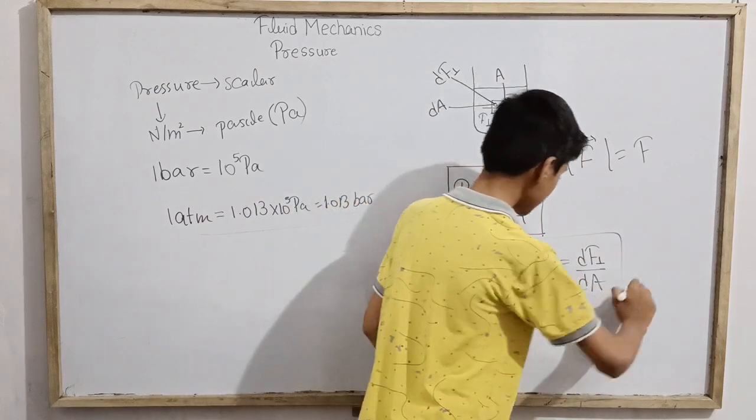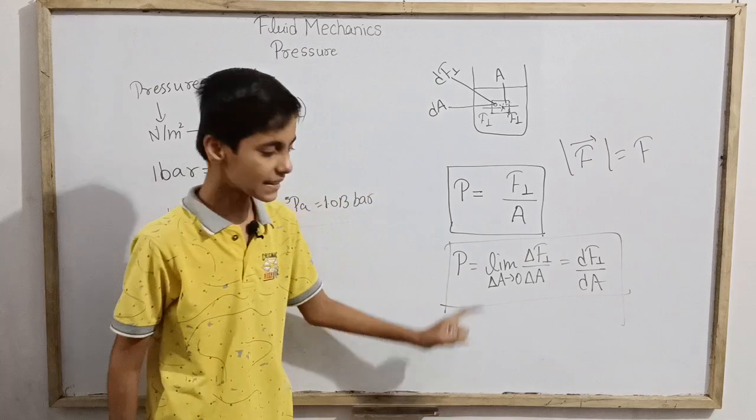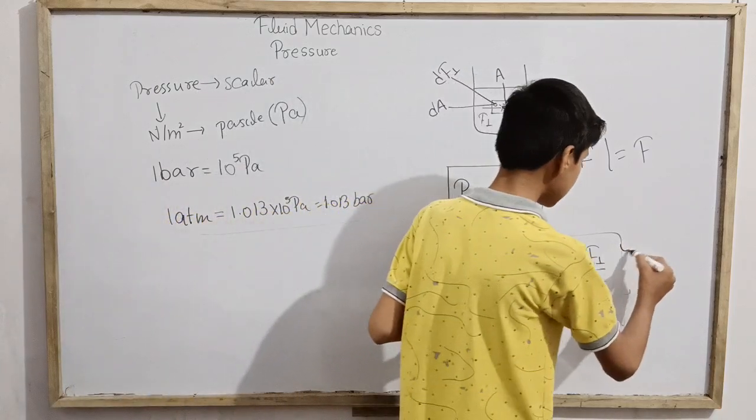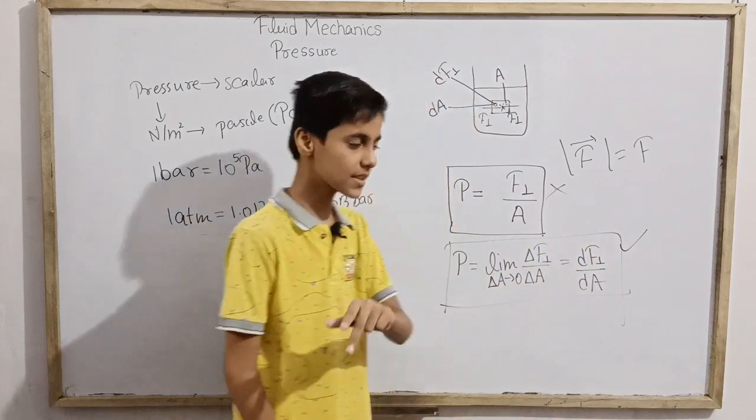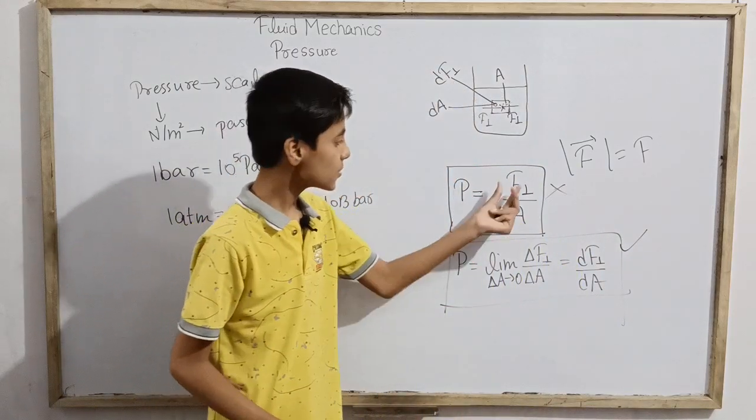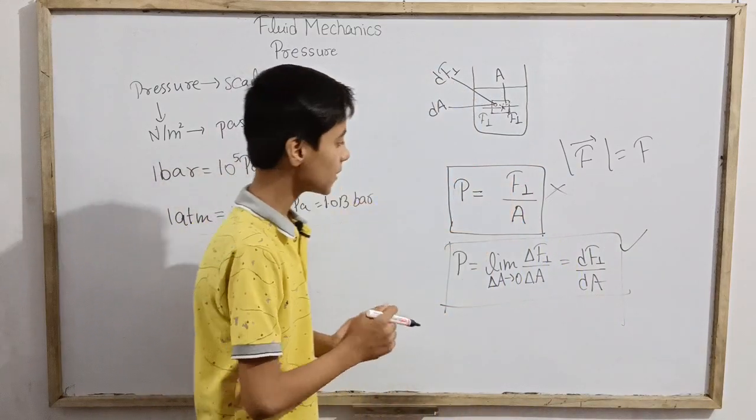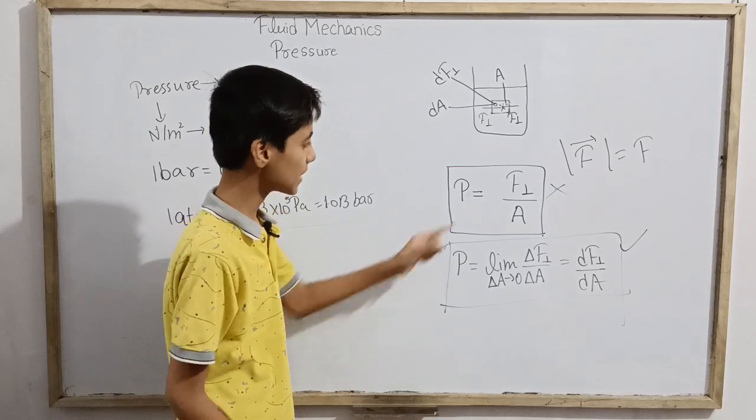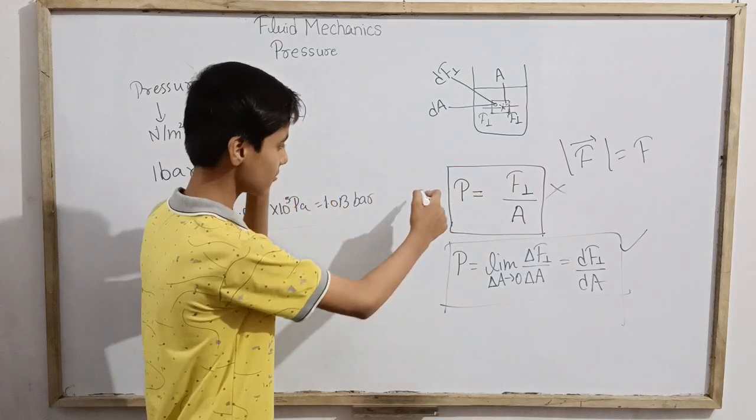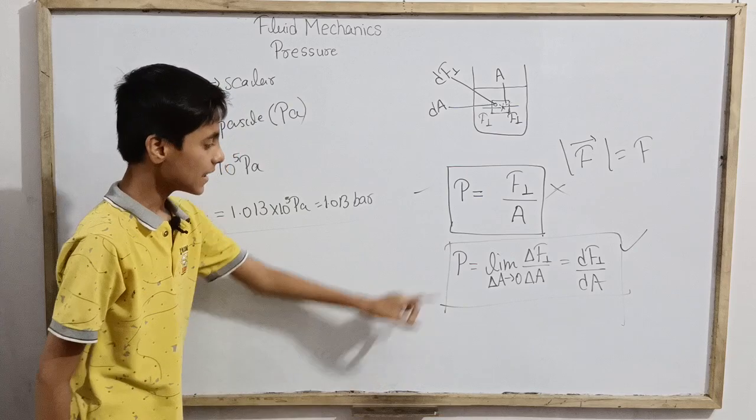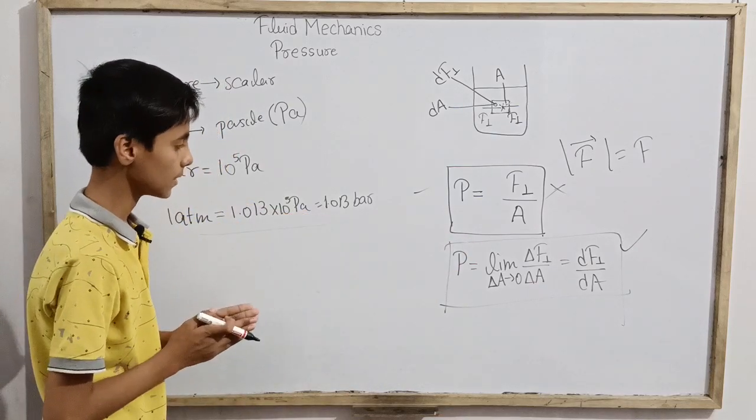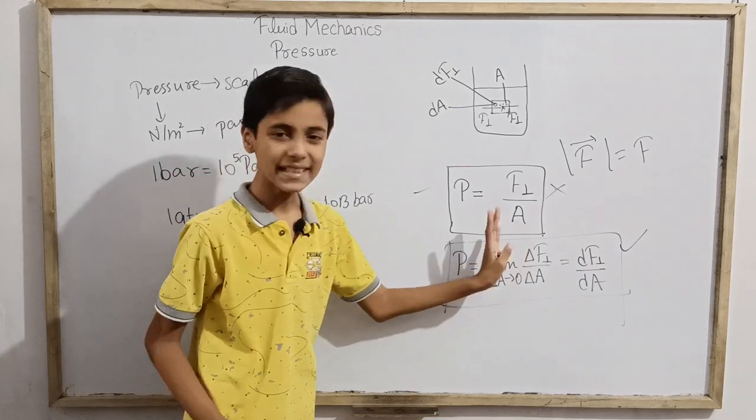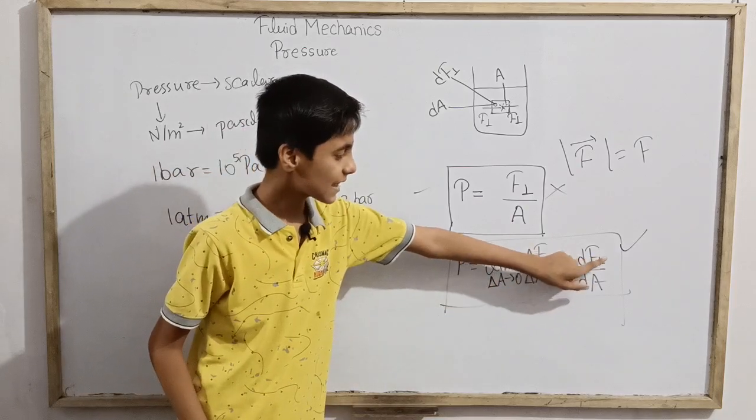So here we define pressure as the limit as delta A approaches 0 of delta F normal over delta A, which is basically dF normal over dA. Point to point we define pressure using this formula. This is the formula that always works. When the pressure is constant or may vary, we have to be dealing with this kind of formula using calculus.